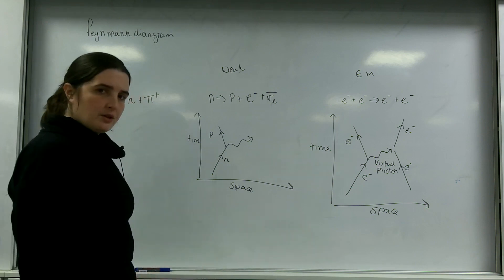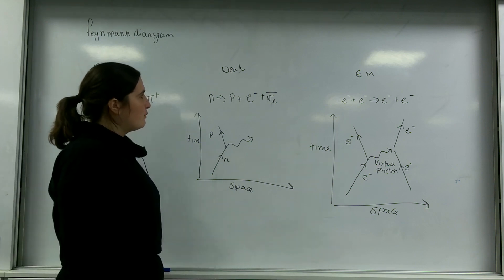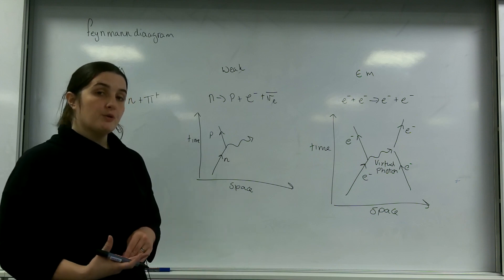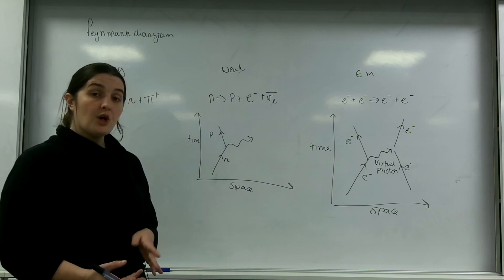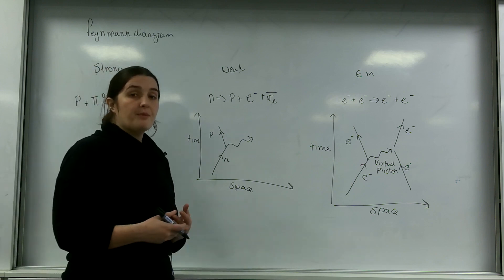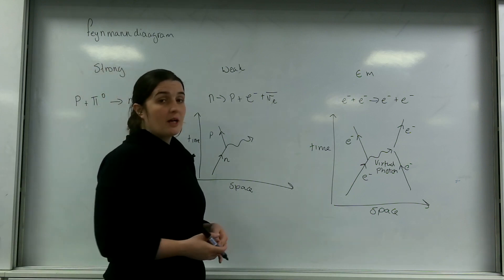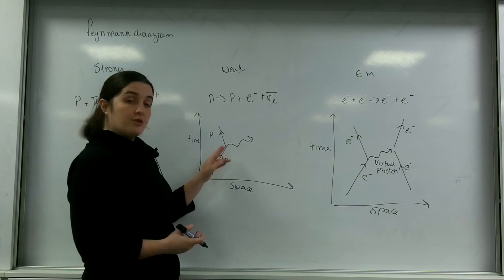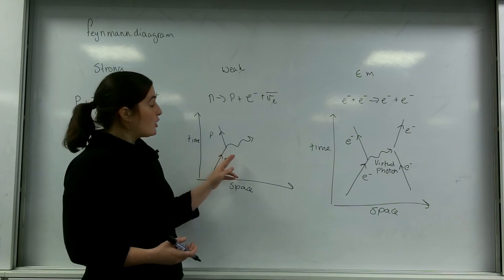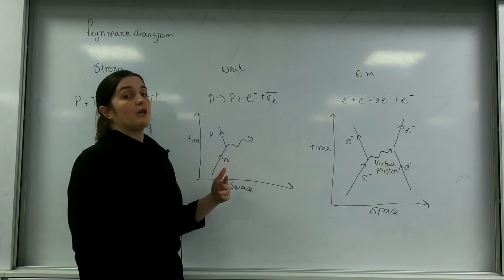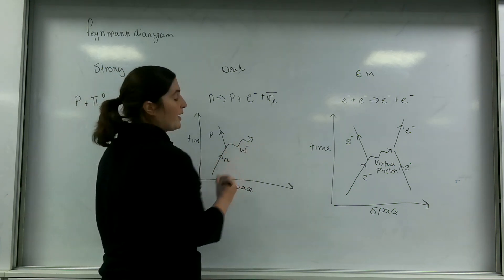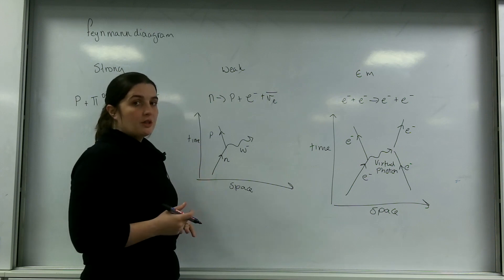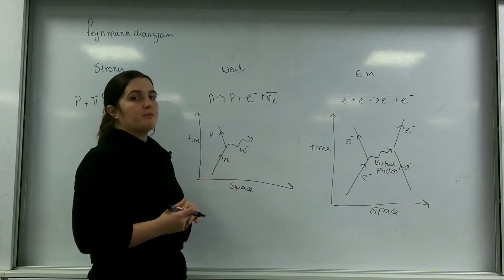The exchange particle for a weak interaction is a W plus or minus boson, and I can work out which one it is by looking at charges. Charge is something that must be conserved in all interactions. A neutron comes in with zero charge and a proton goes out with plus charge, so this boson must have taken away the negative charge. This is the W minus boson.